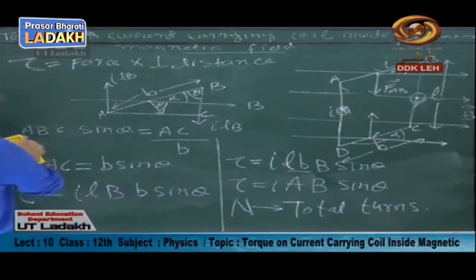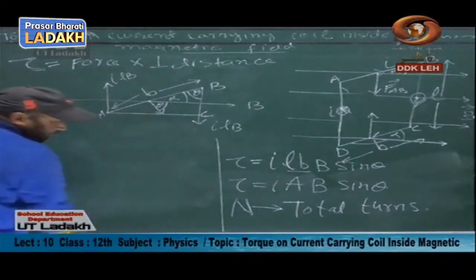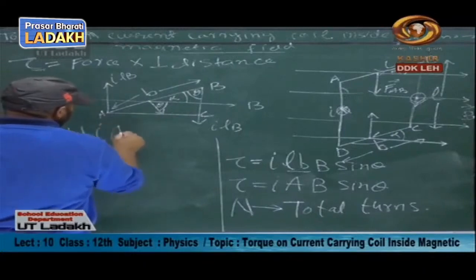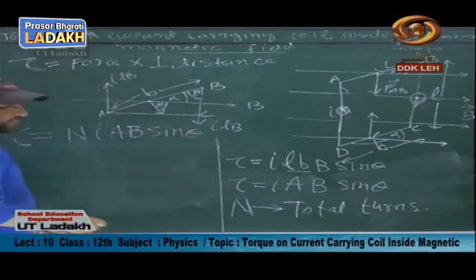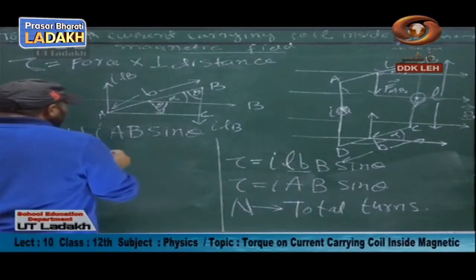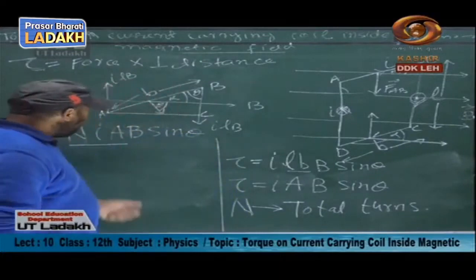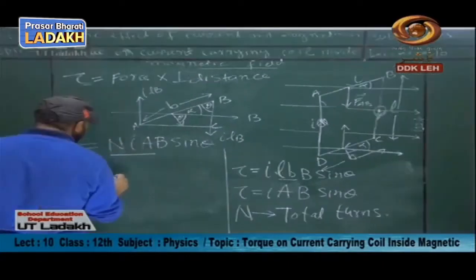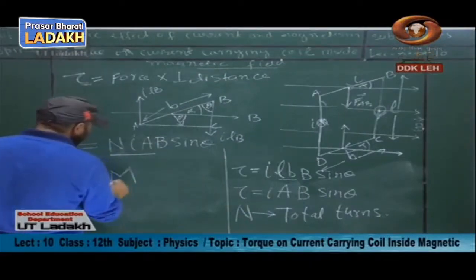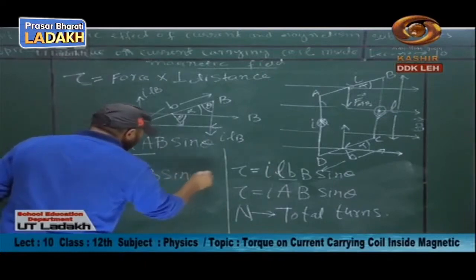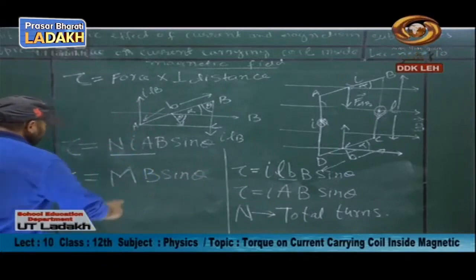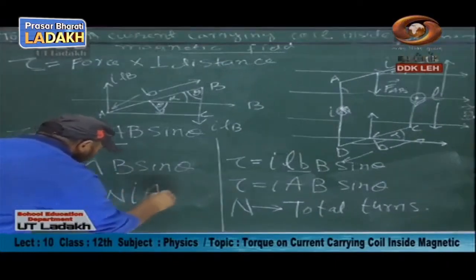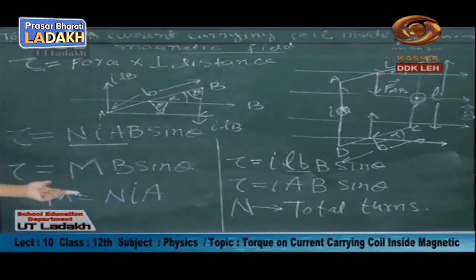Now, N × I × A is called the magnetic dipole moment, represented by M. So M = NIA. Therefore the torque expression is τ = MB sin θ. In vector form, the torque is τ = M × B. The direction of M is given by the right-hand thumb rule applied to the current direction in the coil.